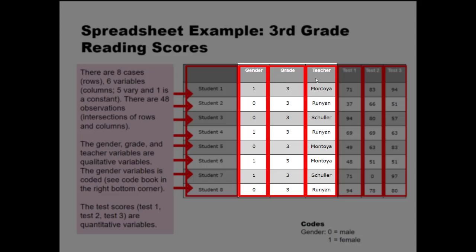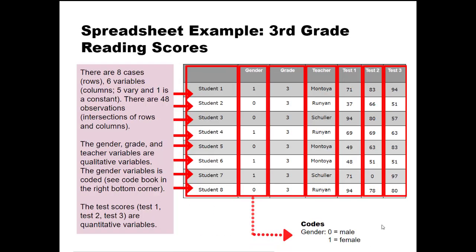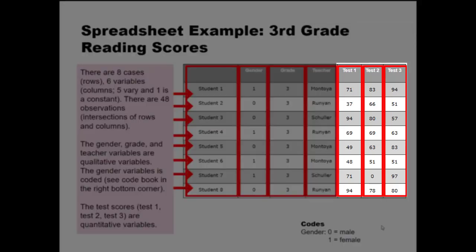Gender, grade, and teacher describe qualities about each case — these are qualitative variables. For the gender variable, there's a code book at the bottom of the page that tells you what the different codes stand for. The quantitative variables in this case are Tests 1, 2, and 3, because they describe a quantity — they describe how many points each case received on each one of those tests.